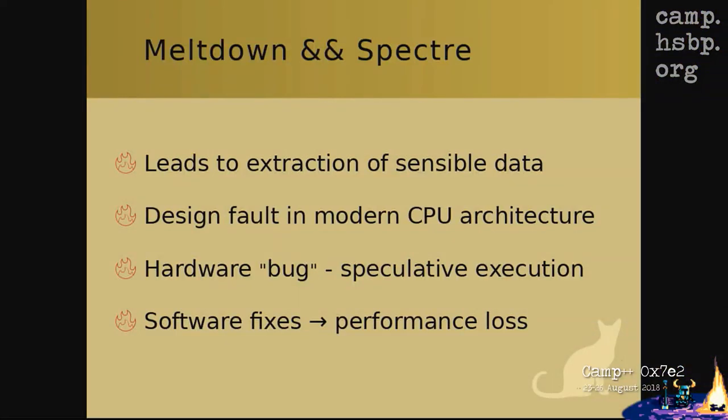Next, 2018 had Meltdown and Spectre — big news. This bug leads to extraction of sensitive data. It's a design fault in modern CPU architecture — specifically a feature called speculative execution, where the CPU pre-calculates things it might need later and discards them if not needed. But with this bug, you can extract that probably sensitive data out of the CPU. There are software fixes, but they cause a noticeable performance loss on your CPUs.